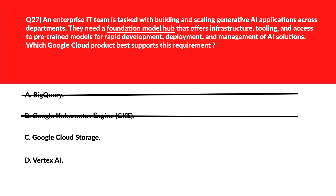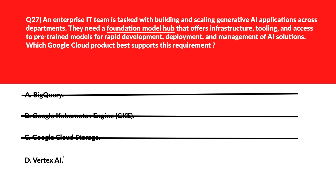Option C says Google Cloud Storage — this service handles data storage but doesn't provide tools for building or deploying AI. Reject. Option D says Vertex AI. Vertex AI is a full-stack platform that supports infrastructure, tooling, and model access for generative AI. The question requires a platform offering infrastructure tooling and access to pre-trained models for rapid development. Option D is the right choice.